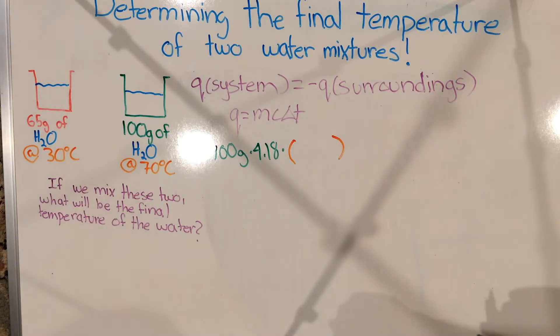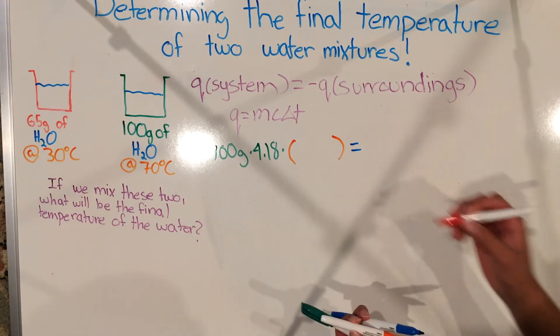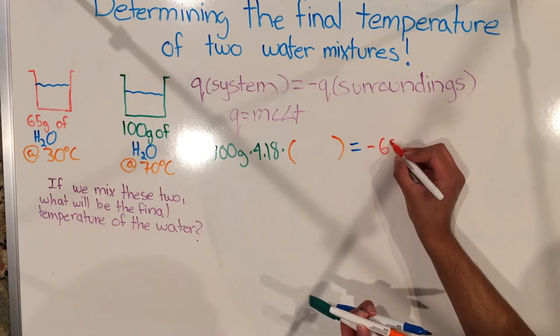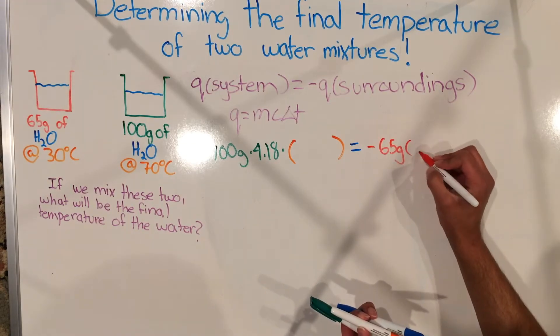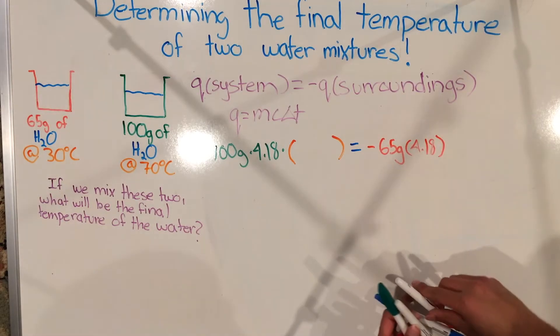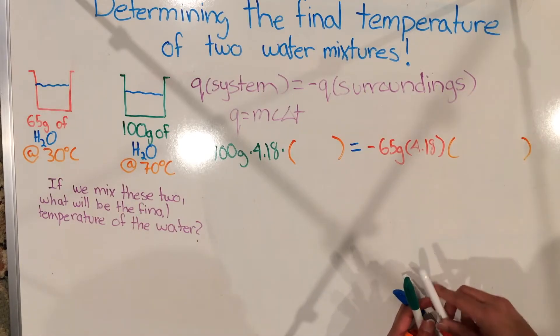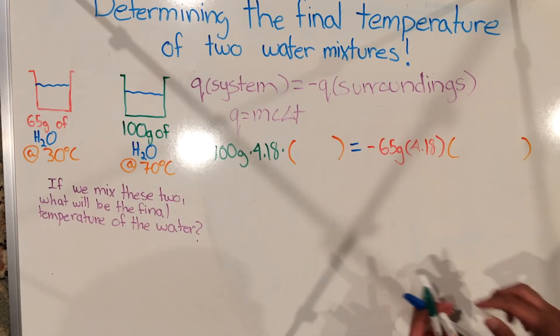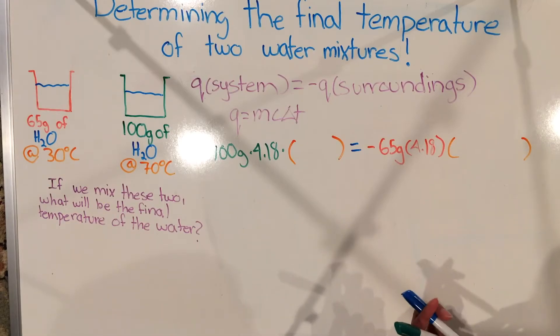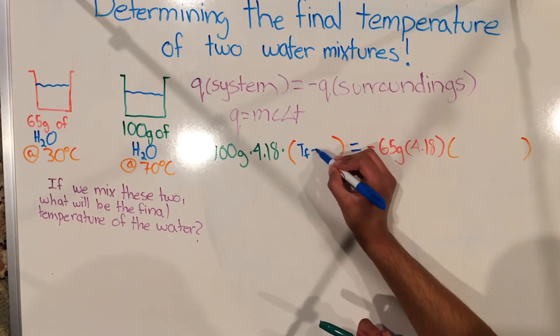So if we consider one of these jugs as our surroundings and one as our system, we know that Q or heat or change in temperature will be opposite in sign to each other. Now we use this property and plug in the equation Q equals MC delta T into the first thermodynamic equation for each of these sections. So as we do this, we get 100 grams times 4.18 times T, the final temperature minus 30 degrees Celsius.